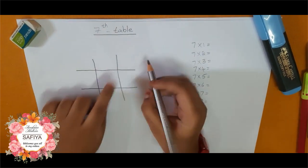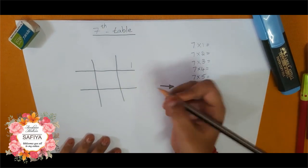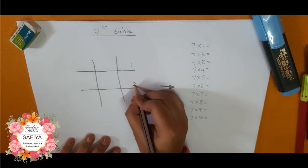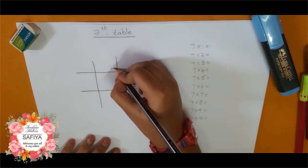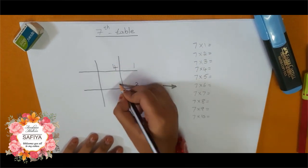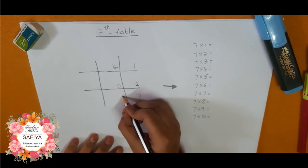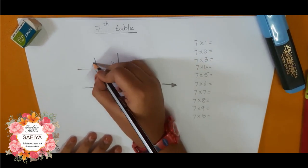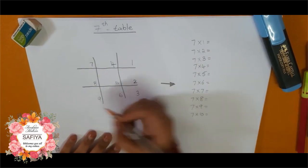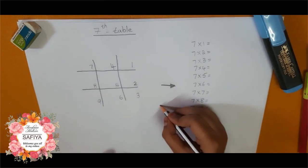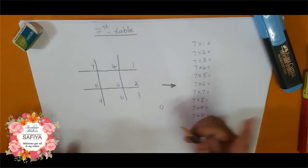Now start with here: one, two, three, four, five, six, seven, eight, nine, and put here zero.